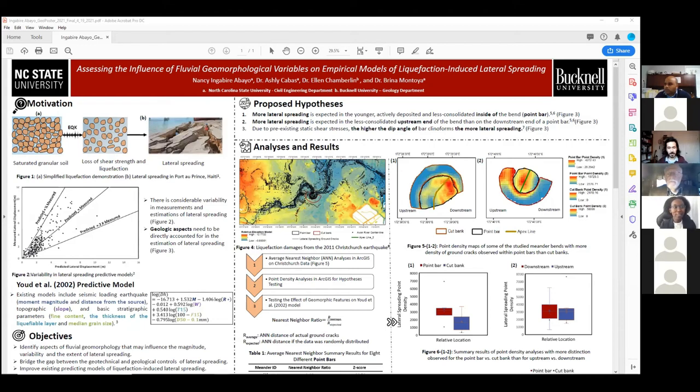Hello everyone. Thank you for being here. My name is Nancy Ingavire Awayu, and I'm a second-year PhD student at North Carolina State University in civil engineering. The research that I present today is on assessing the influence of fluvial geomorphological variables on empirical models of lateral spreading, and this was conducted under the guidance of my advisors, Drs. Kavas, Chamberlain, and Montoya.